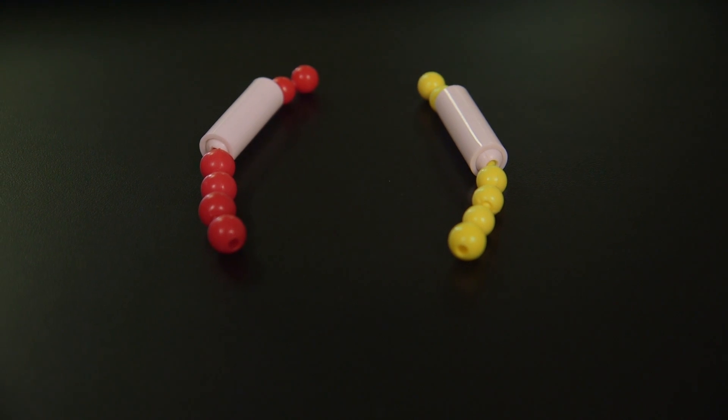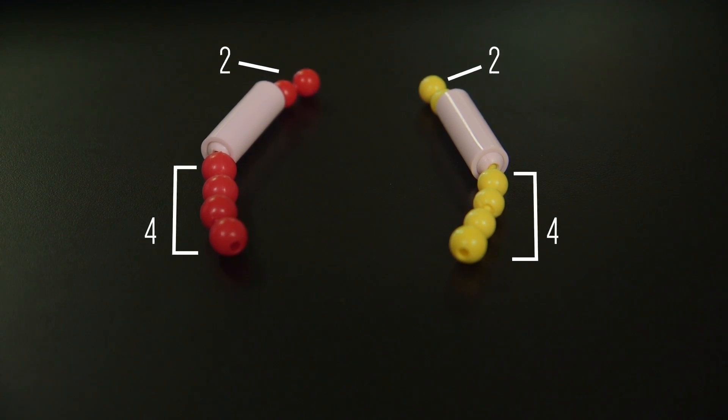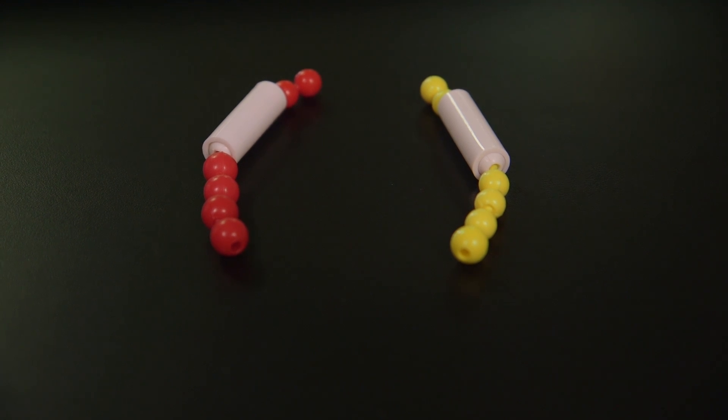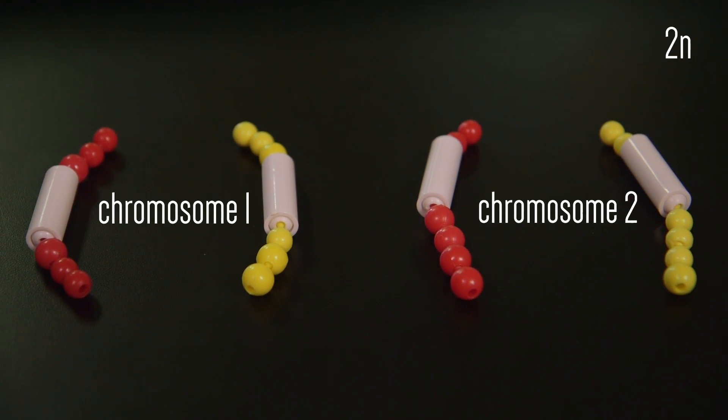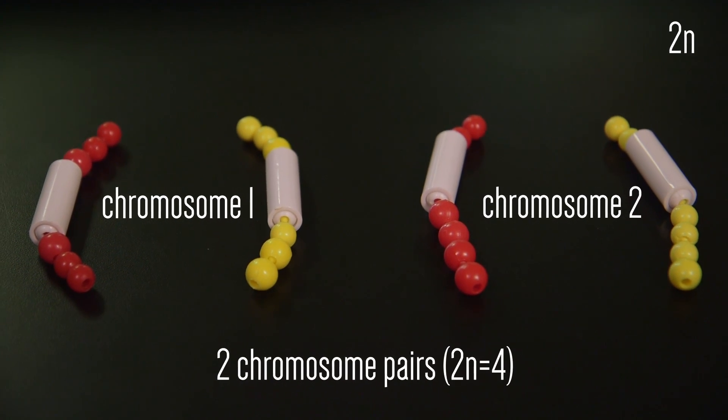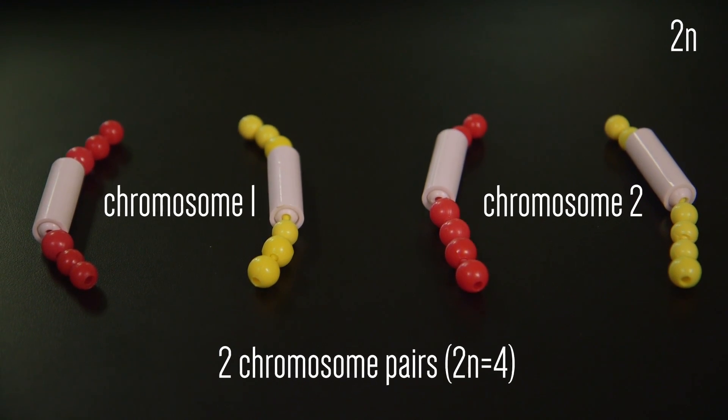The second chromosome will have two beads on one side of the centromere, and four beads on the other side, like this. A red one from the maternal parent and a yellow one from the paternal parent. So the diploid or 2n number of the cell would still be 4, that is, 2n equals 4. This is what the cell would have through G1 of the cell cycle.